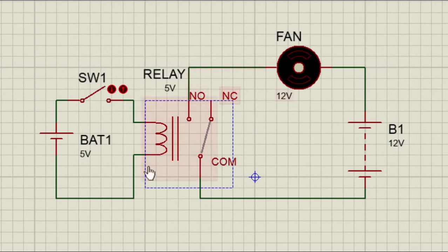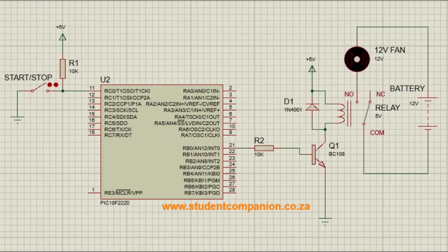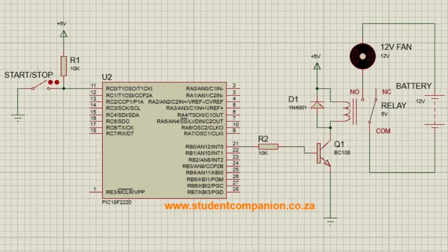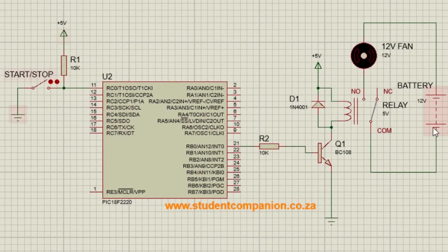The other important parameter when selecting a relay is the enclosure and the mounting. The type of enclosure used depends on the operating environment and the required mounting method. When using a PIC microcontroller to control a relay, this is a typical circuit showing how a relay could be connected to a PIC microcontroller.